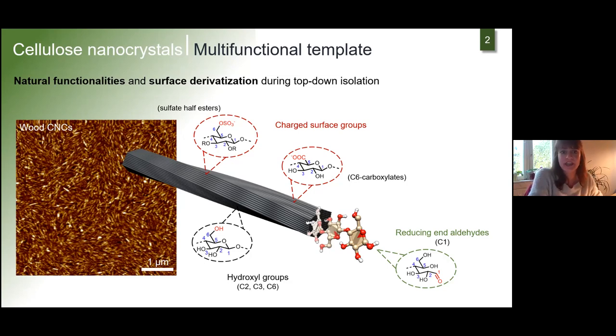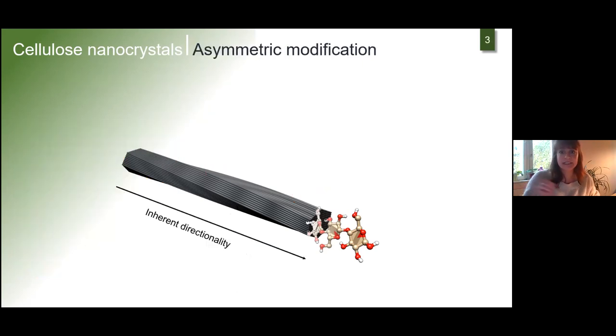The isolation method we use in our research group is HCl gas hydrolysis, which doesn't introduce surface charges. We add a second step: surface TEMPO oxidation. By that we introduce C6 carboxylates which provide good colloidal properties and stability in dispersion, and they can be used as a reaction template for chemical modification.